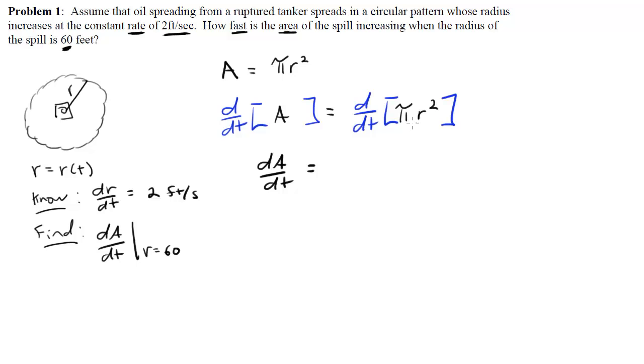Same thing over here. The derivative of πr² with respect to t, where r is a function of t, would be 2πr to the 1, but then times dR/dt. And that's coming from the chain rule. So I basically have my related rates equation now. It's an equation because there's an equal sign, and there are rates in it, and they're being related. So it's a related rates equation.